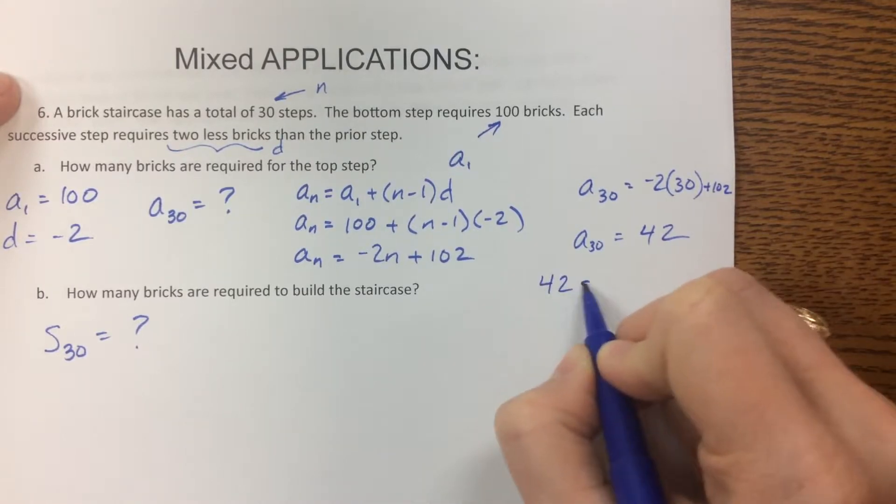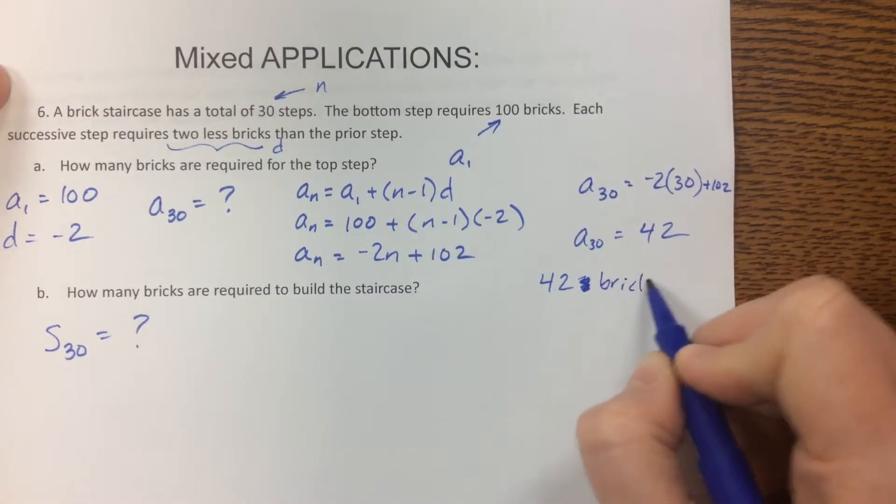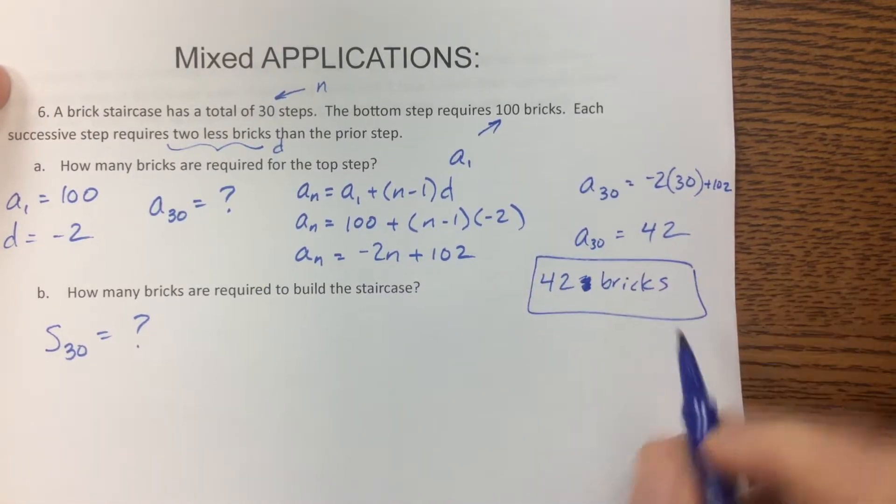So the final answer to this first part is that there's 42, not steps, my bad, steps is n. There's 42 bricks in the 30th step of that staircase.